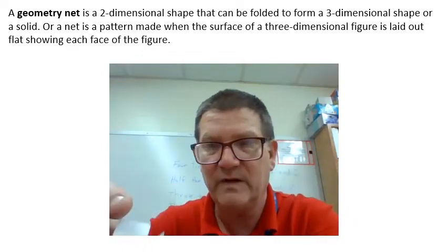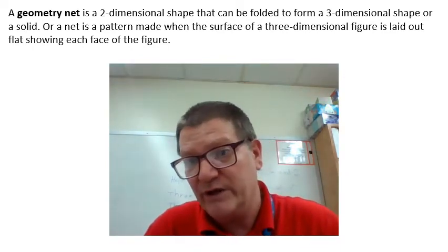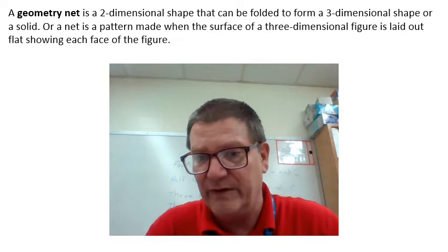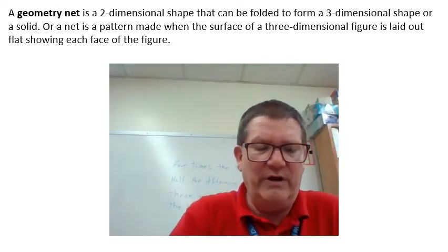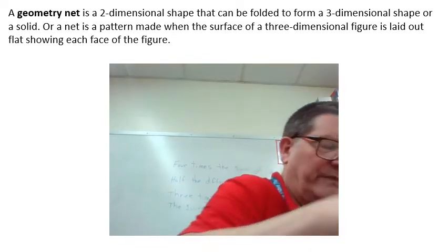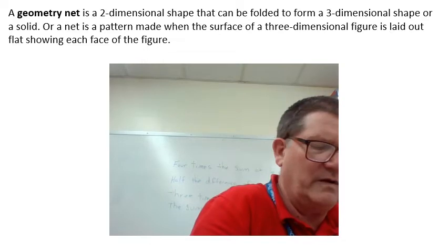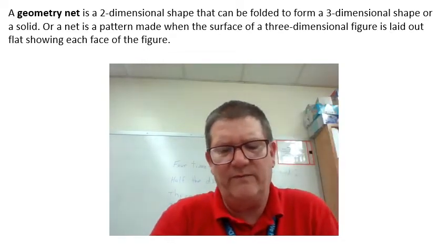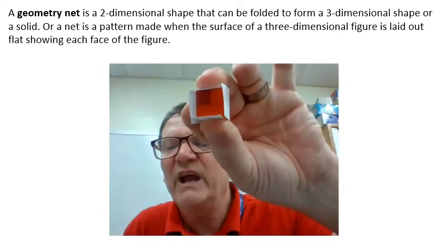Now you will take an estimation and determine how many cubic units you think it needs to fill this net. Now I'm going ahead and fill this one real quick, and you can see when I put it up next to the camera, I put in the first layer. The first layer has four cubic units.